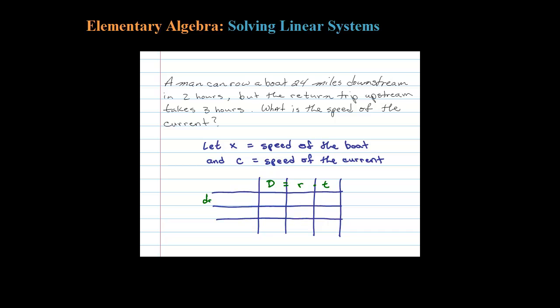There are two things going on here: first he's rowing downstream, and then secondly he's rowing back upstream. To organize our data, let's fill in this chart. The trip downstream took 2 hours, and to get back it took him 3 hours.